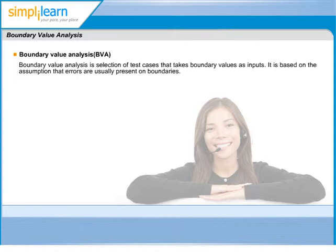BVA is based on testing at the boundaries between partitions. If you have ever done range checking, you were probably using the Boundary Value Analysis technique. Even if you weren't aware of it, we have both valid boundaries and invalid boundaries.